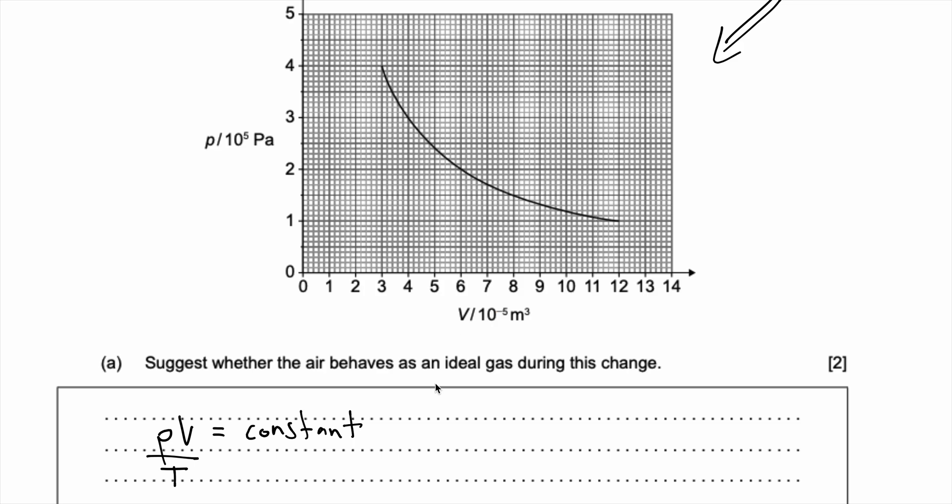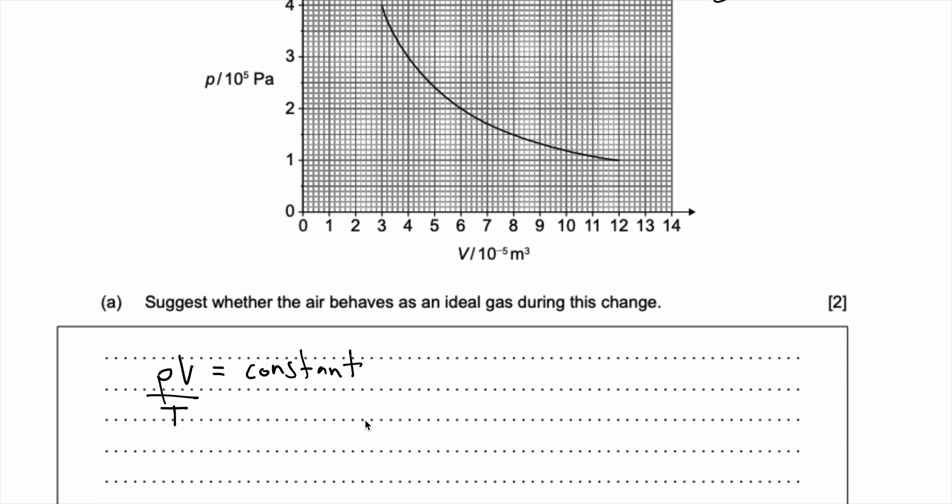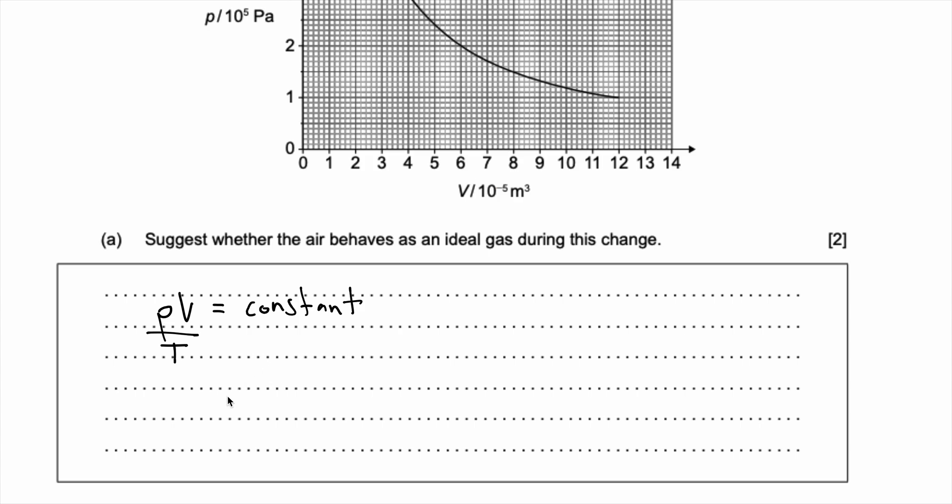If they are equal, that means that this is an ideal gas. If not equal, that means this is not an ideal gas. We can ignore this T because it'll end up cancelling, but just for the sake I'll keep it here for now.